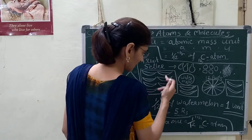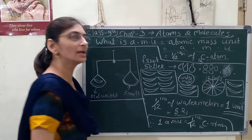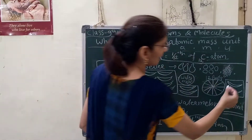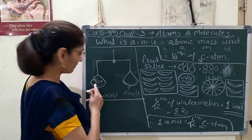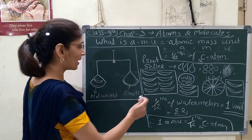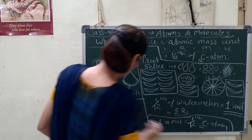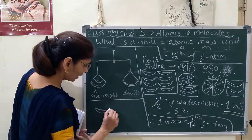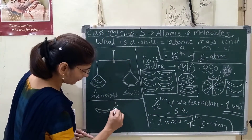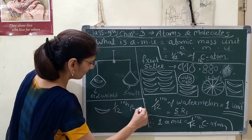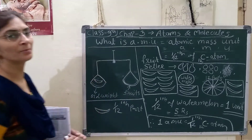He made 12 equal parts — 1, 2, 3, 4, 5, 6, 7, 8, 9, 10, 11, 12. Now one part of the watermelon becomes one standard unit of weight. So one twelfth of the watermelon is the lowest standard part, and there is a standard unit for this part.